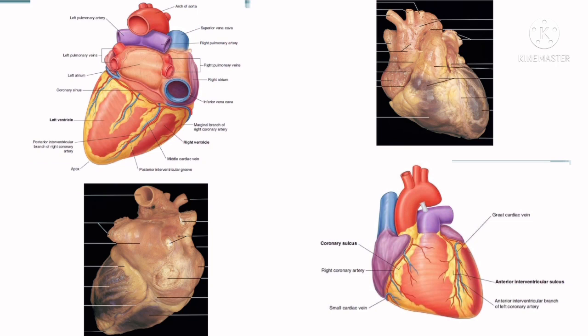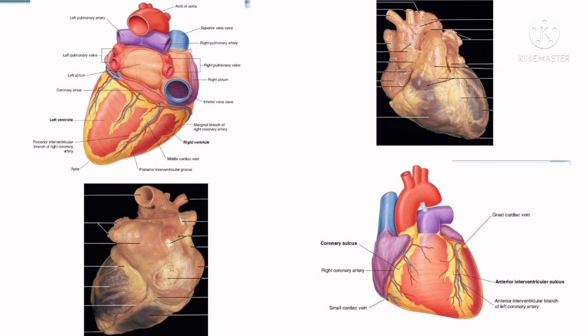The heart consists of four chambers: right atrium, right ventricle, left atrium, and left ventricle. The two atrial chambers are separated from each other by a vertical septum known as the interatrial septum, and the two ventricular chambers are separated from each other by the interventricular septum.